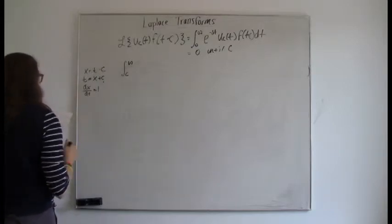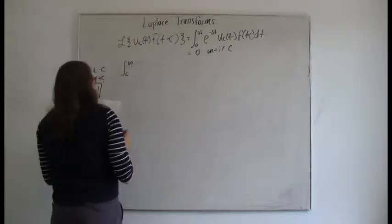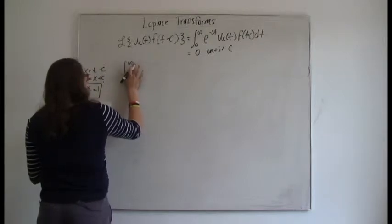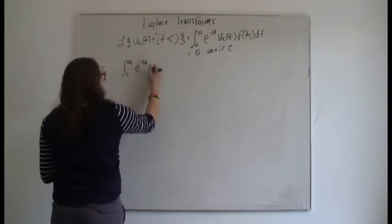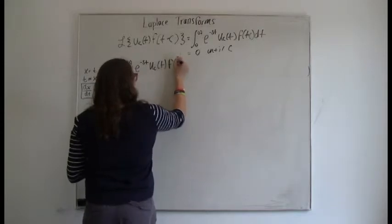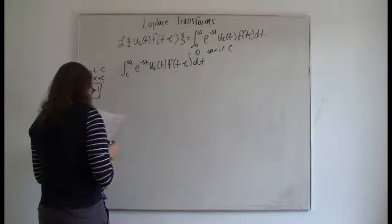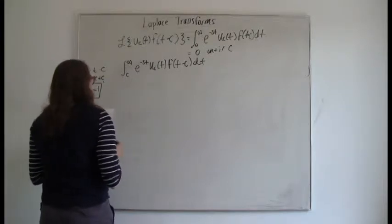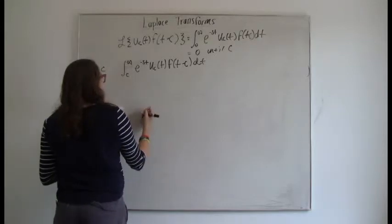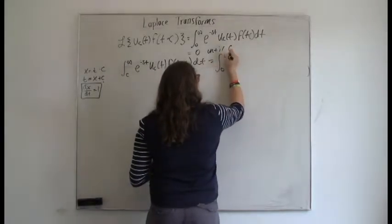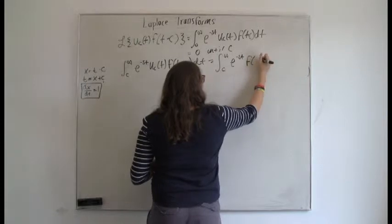That's really handy. Now, once we've reached the value c, the unit step function just becomes one — it's basically just a constant. So we can rewrite the integral without the u_c(t) function as the integral from c to infinity of e to the negative st times f(t minus c) dt.